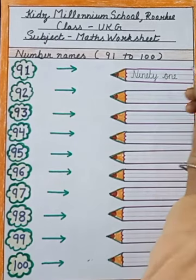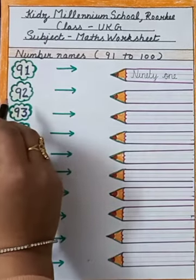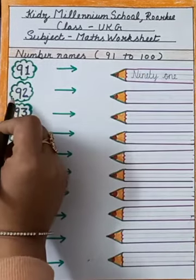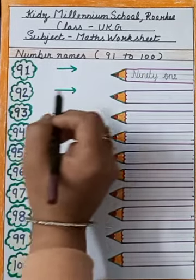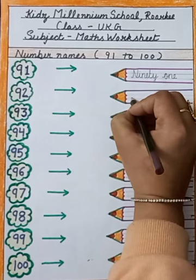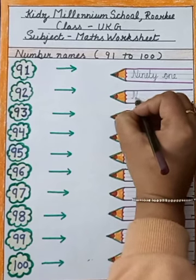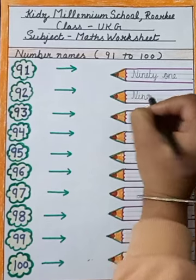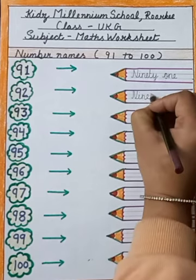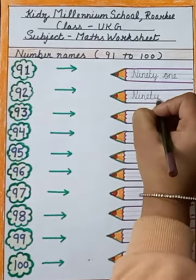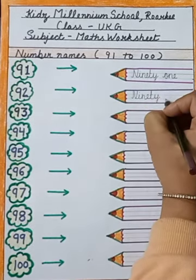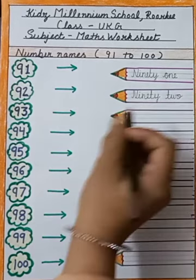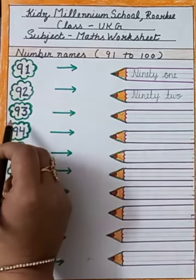Next is 92. Spelling is N-I-N-E-T-Y, ninety, T-W-O, two. 92.